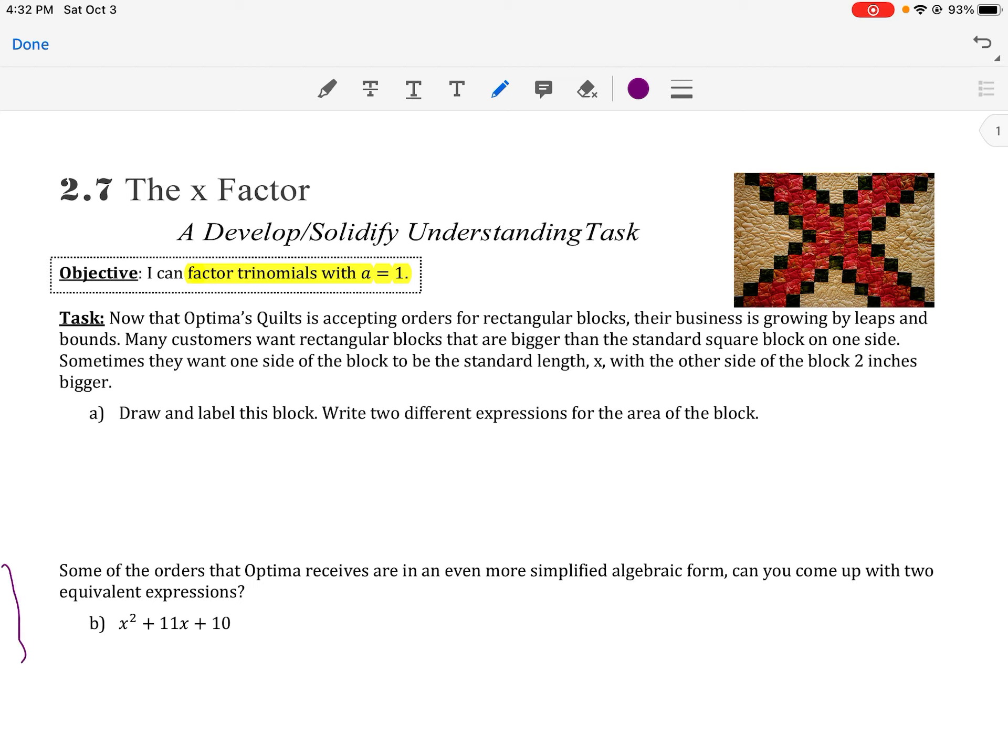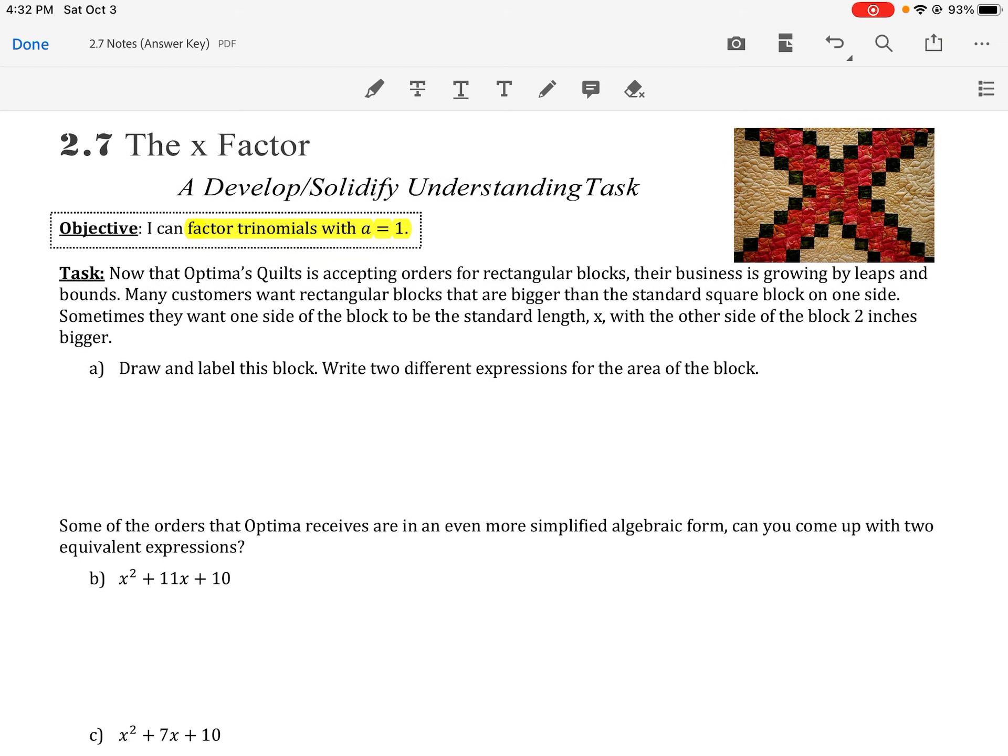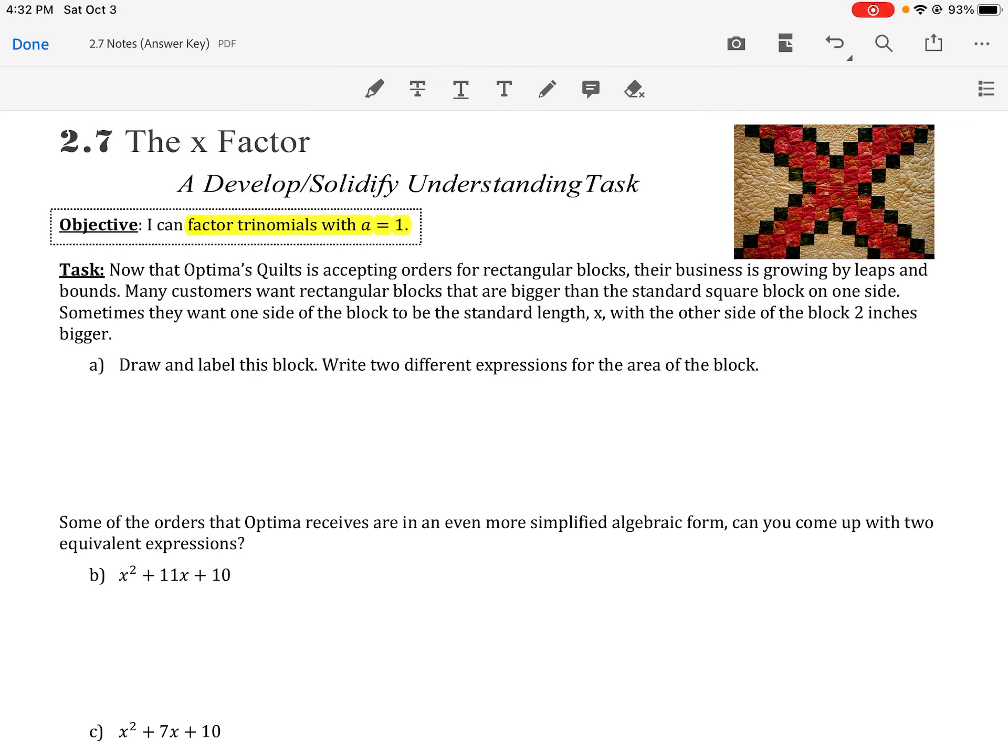Our task to start off with says now that Optima's quilt shop is accepting rectangular blocks, their business keeps growing by leaps and bounds. Many customers want rectangular blocks that are bigger than the standard square block on one side. Sometimes they want one side of the block to be the standard x and the other side to be two inches bigger.